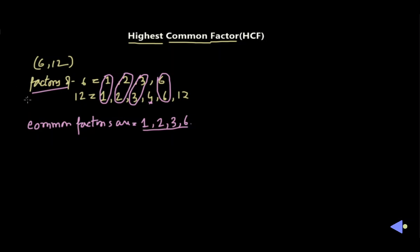Out of these common factors we have to find out which one is the largest — the highest. HCF means highest common factor, so we need to find the highest one. Obviously 6 is the highest or largest, so the HCF of 6 and 12 is 6.